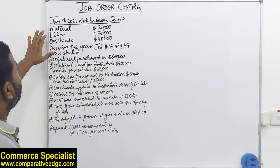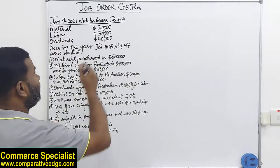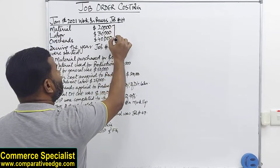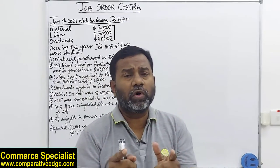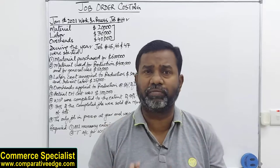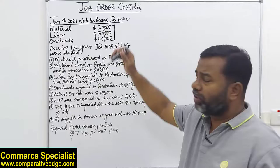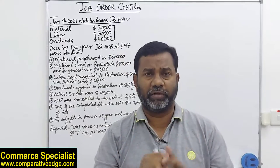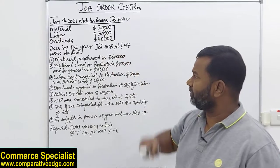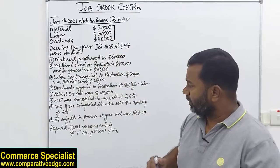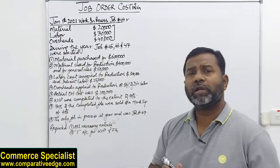Looking at this question: on January 1st, 2021, work in process — job number 44 — has a given amount, meaning we started working on this job in the previous year but could not complete it. During the year, job numbers 45, 46, and 47 were started. Materials were purchased for 600,000.